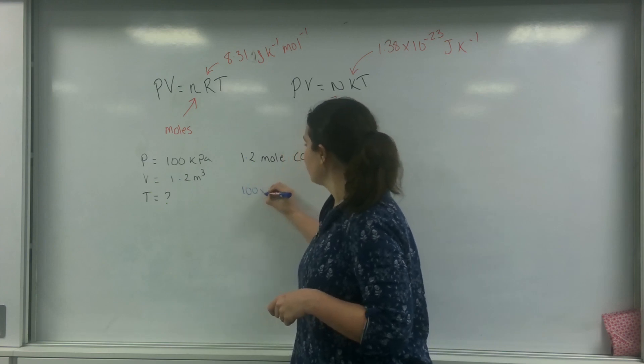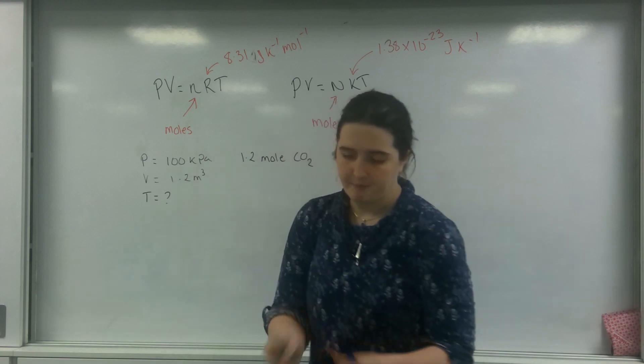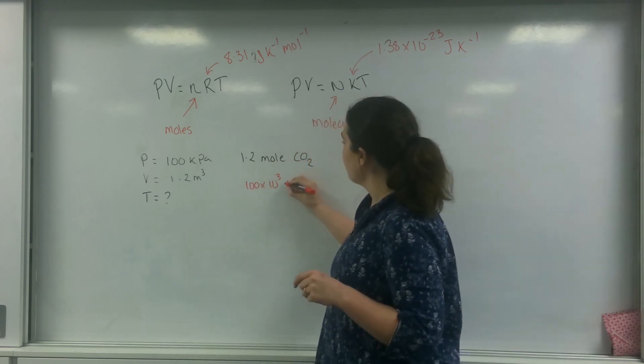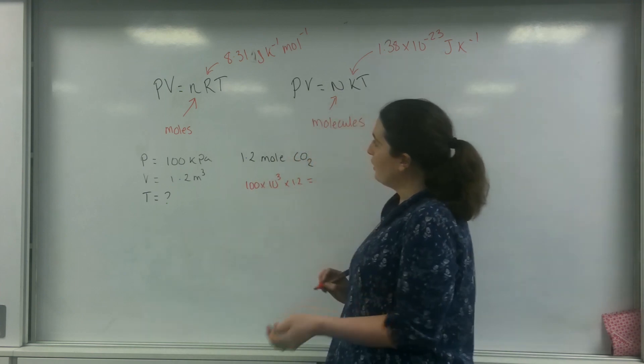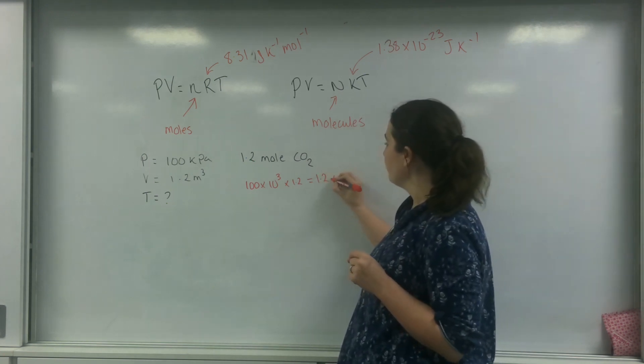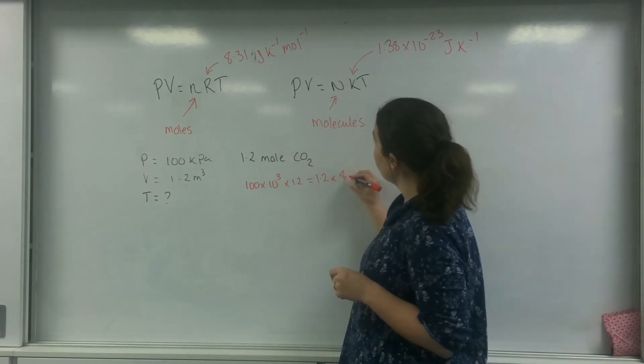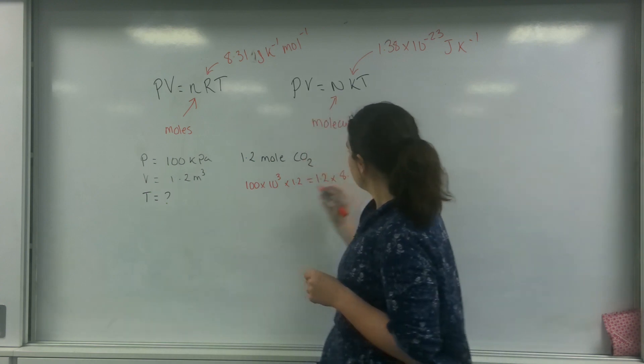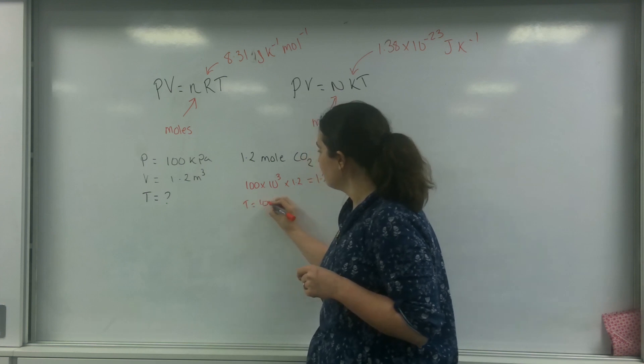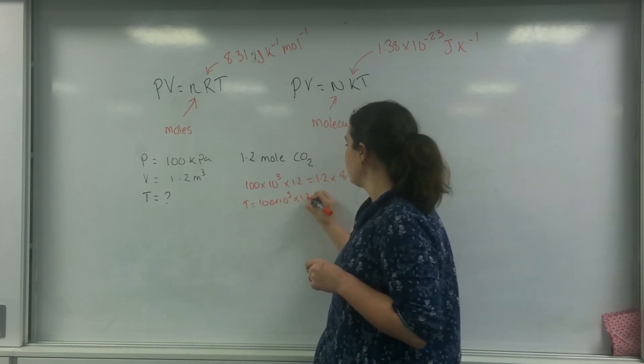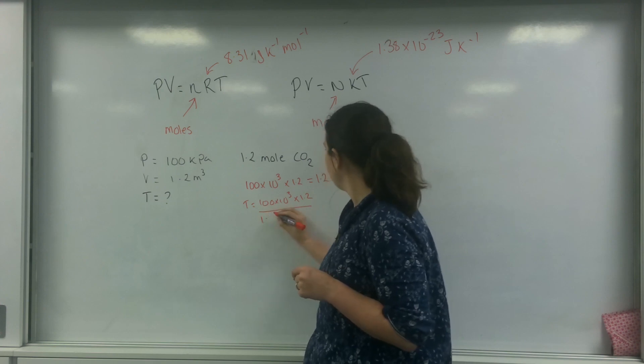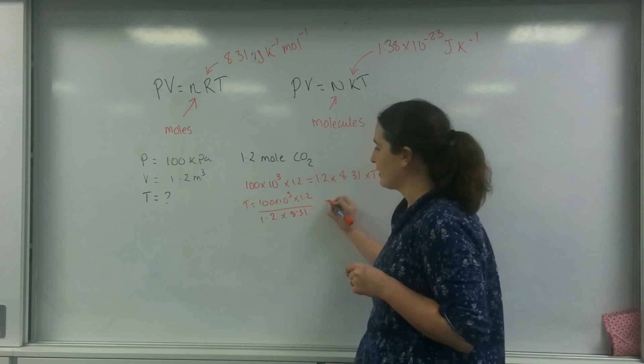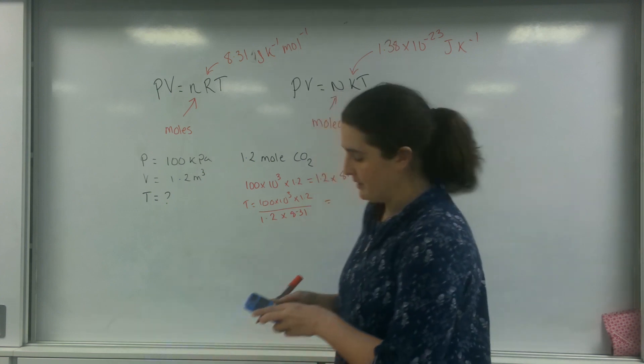Let's put it in. I've got 100 times 10 to the 3, I'm going to use a red pen right there. So I've got 100 times 10 to the 3 times by 1.2 equals the number of moles I have, which is 1.2 times the gas constant of 8.31 times by my temperature.